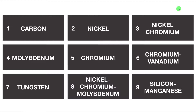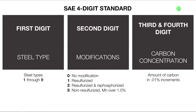Hi. In the previous tutorial we talked about the nine different types of steel that exist. We also talked about the SAE four-digit standard, which is the way that these different types of steel are classified based on a numerical system.